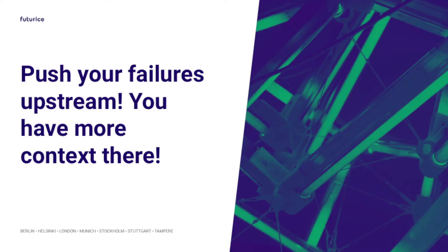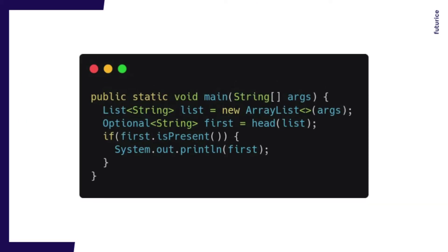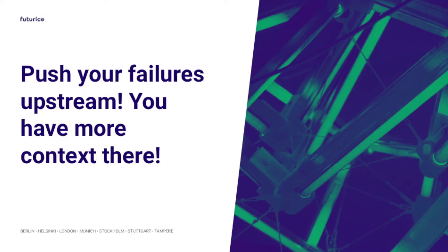This is already better — we now have the failure state explicit. But it's still not perfect. The problem is we're pushing our failures downstream: if head fails, we push it to the caller and there we need to handle the failure. At that point we might not have the context needed to properly handle it. For example, if this came from a request we'd want to reply with HTTP 400, or if from user input we'd want to show a nice error message.